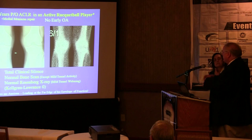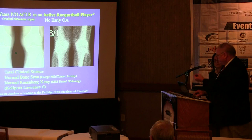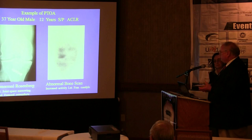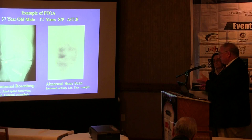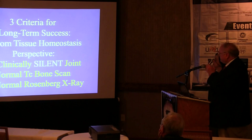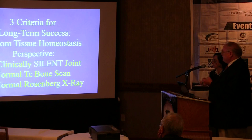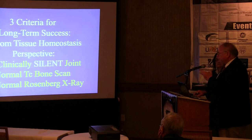The point is: restoration of tissue homeostasis and joint homeostasis trumps structural damage and abnormality. We found three criteria for long-term success from a tissue homeostasis perspective: a clinically silent joint, a normal bone scan, and a normal Rosenberg x-ray. If you can achieve these three things, it doesn't matter what other factors are present — it doesn't matter what the MRI says.